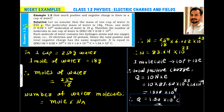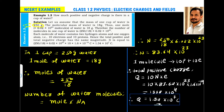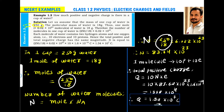We know that one mole equals 6.022 × 10²³ molecules — Avogadro's number. So one mole contains Avogadro's number of molecules. Therefore, n moles contains n × Avogadro's number of molecules. The number of molecules equals moles × Avogadro's number. For example, 2 moles would contain 2 × Avogadro's number of molecules.